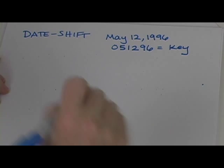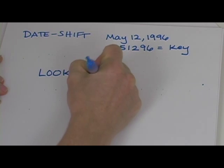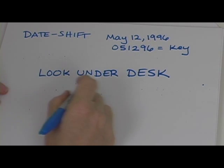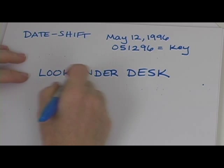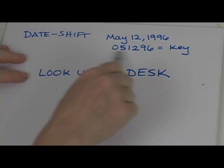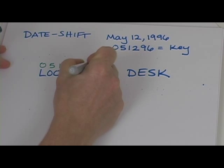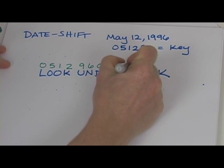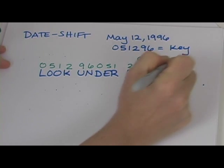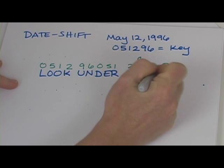So if our message is look under desk, how do we do that with the date shift cipher? Let me show you. So above the words look under desk, you want to write this number over and over. So you are going to write 051296, 051296 and end in a zero. So no matter how long it is, you just keep writing 051296 over and over until you are done.